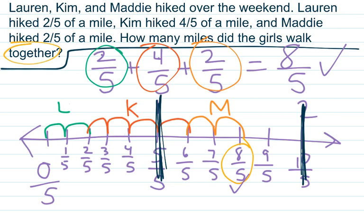So if you remember, one whole was right here, and two wholes was right here. So, this would be one whole, one whole and one-fifth, one whole and two-fifths, one whole and three-fifths. So how many miles did the girls hike? They hiked eight-fifths miles and one and three-fifths miles.